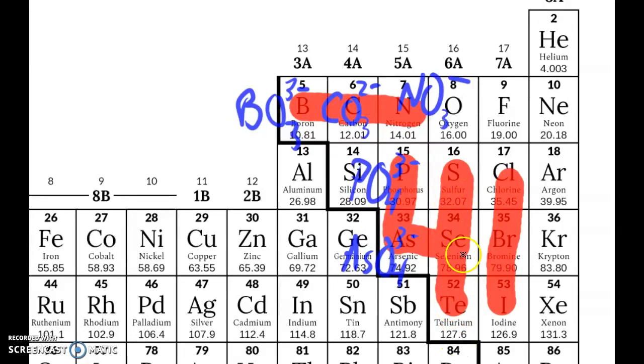Sulfate, selenate, tellurate are going to be 2 negative, and again they're going to be a subscript 4, but 2 negative.